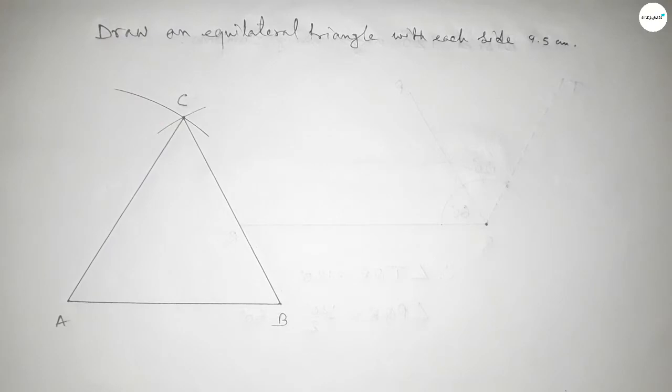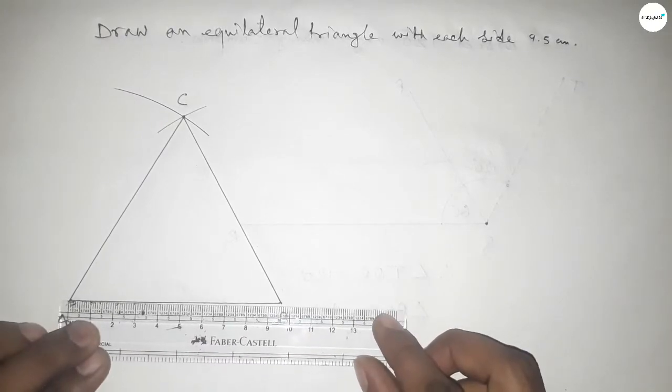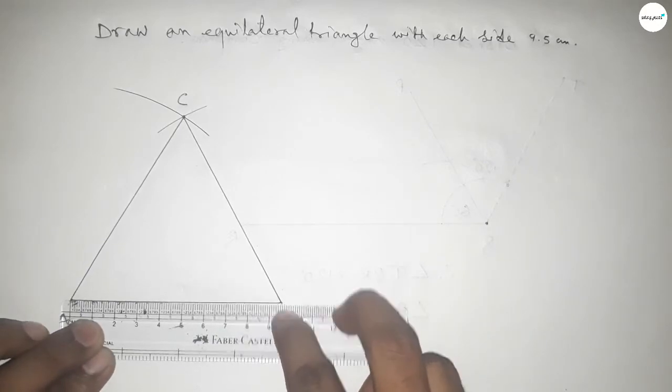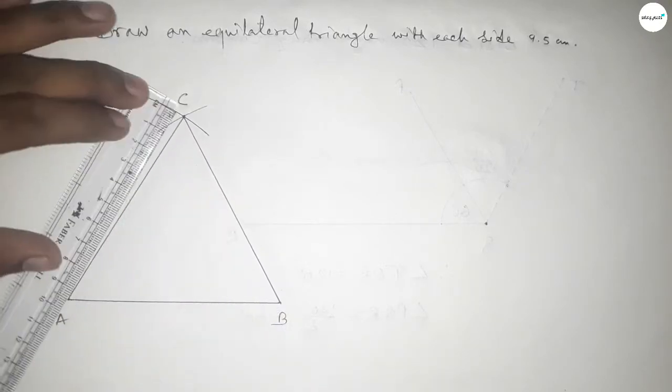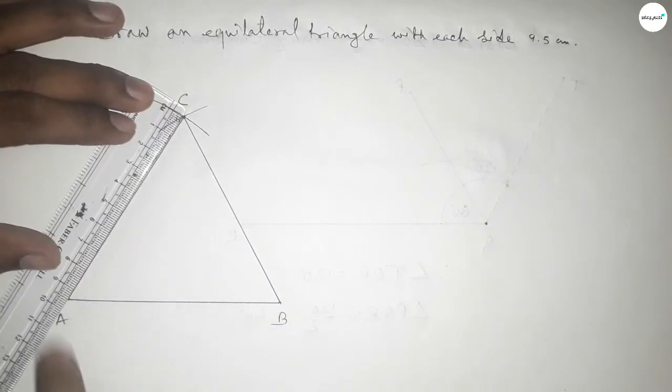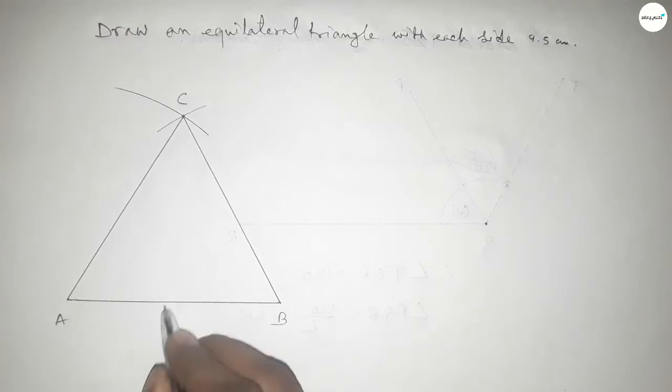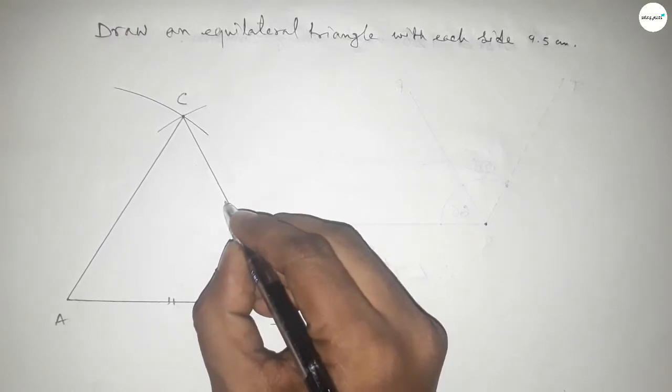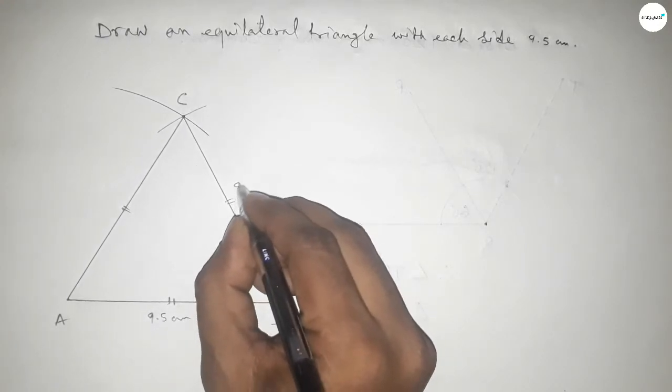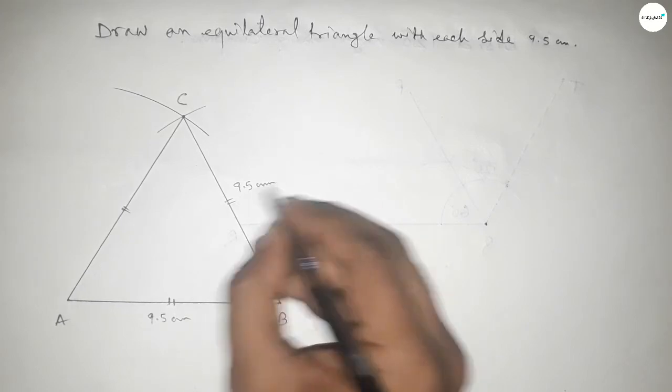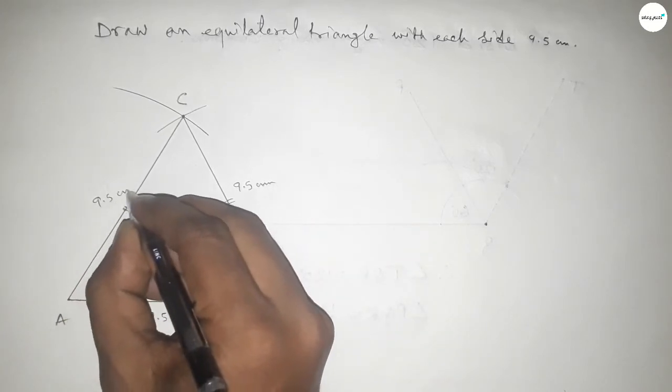Now checking all the sides are equal or not. So this is 9.5 centimeter, this side equal to 9.5 centimeter and this side also 9.5 centimeter. So all the sides are equal so mark equal sign on three sides.